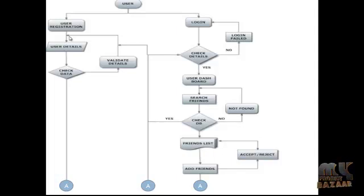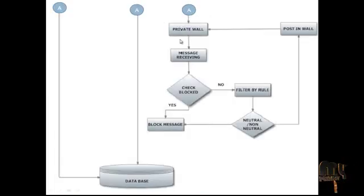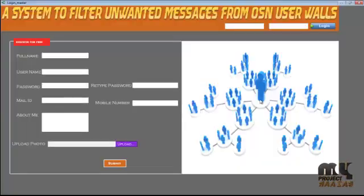Once the message is blocked by the user, that message will not appear in the wall list. If the user allows the message, then it will be posted in the wall. The wall will contain messages provided by users. After receiving the message, it will be checked by the blacklist as well as the filtering rules. Once the filtering rule is applied, the controversy rate is determined.